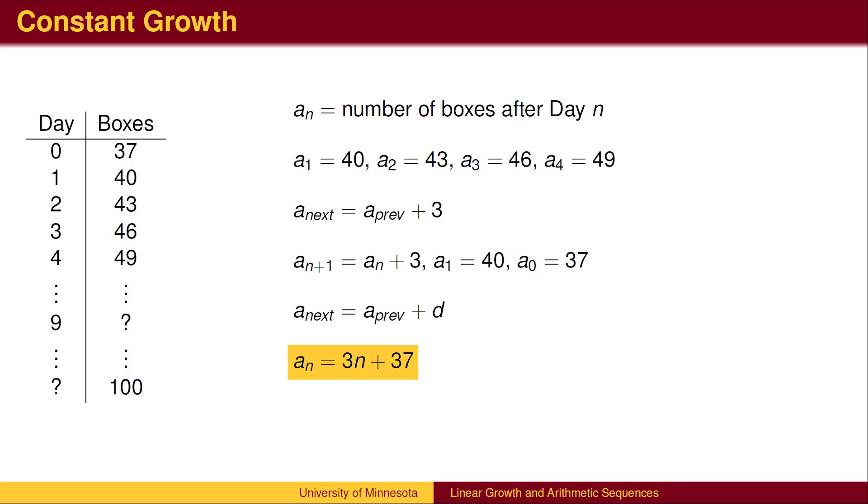In general, we add 3 times the number of days to 37. You may notice that this is the familiar slope-intercept form of a line y = mx + b. The input of a linear function is typically x. In sequence notation, the index is typically n.